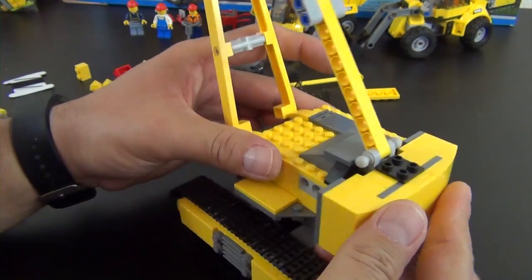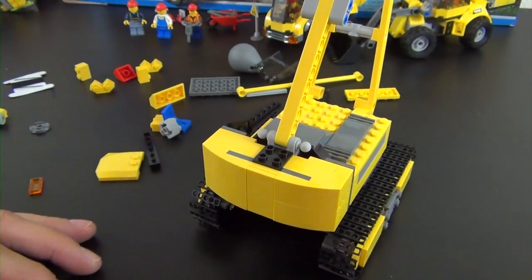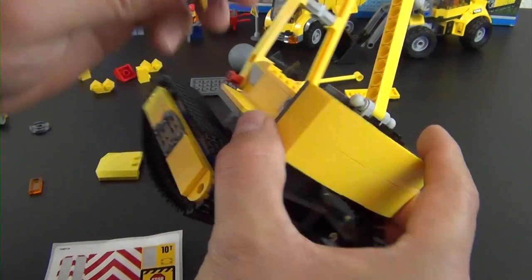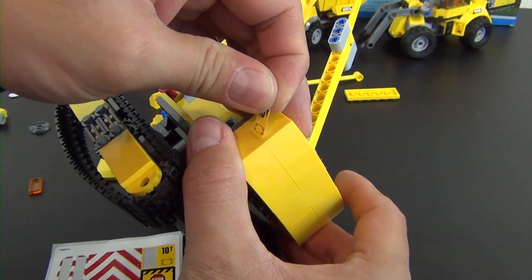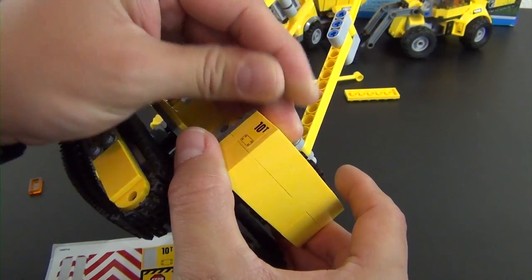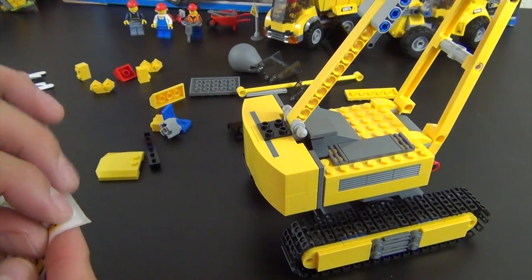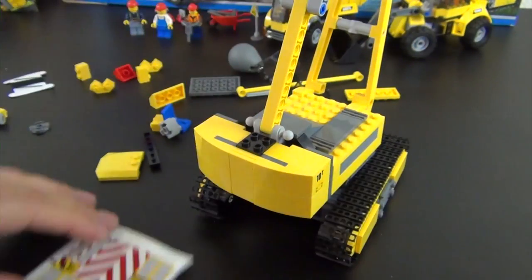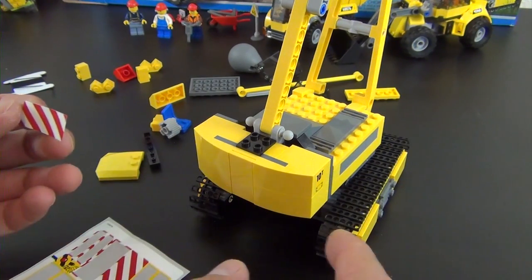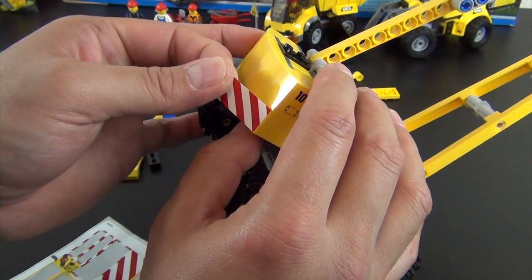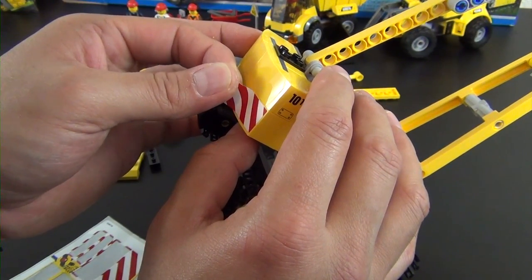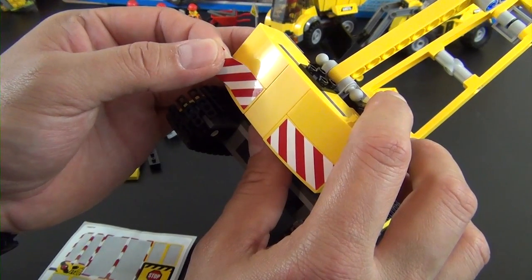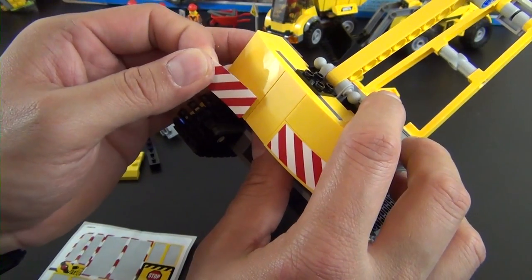We have these axles exposed here and they're going to go through those holes of the Technic bricks and grip on just like that. We have a couple of stickers. We have the 10T sticker here on the side of this brick. The door on the back.